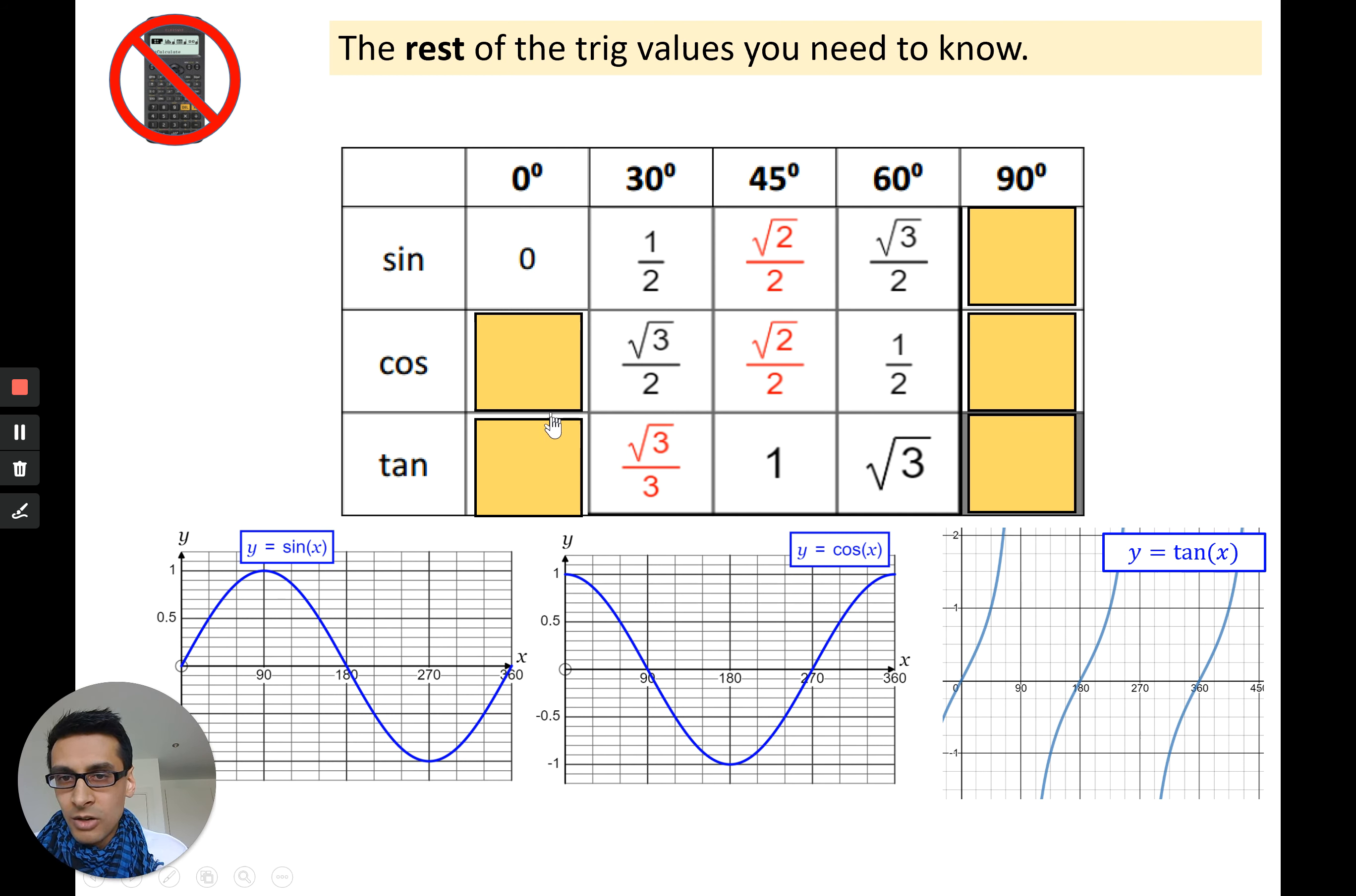Sine zero, you can see that's going to be zero. Cosine zero in the middle, that goes to one. And then tan zero there, it goes to zero. For the 90 degree angles, sine 90 is one, cosine 90 is zero. And then for tan 90, you can see it doesn't actually go anywhere. It's an asymptote. It doesn't touch that line, so it's not defined. You can't have tan 90.